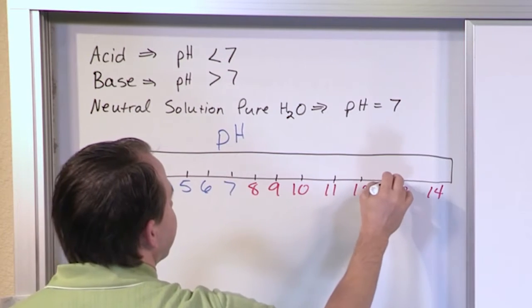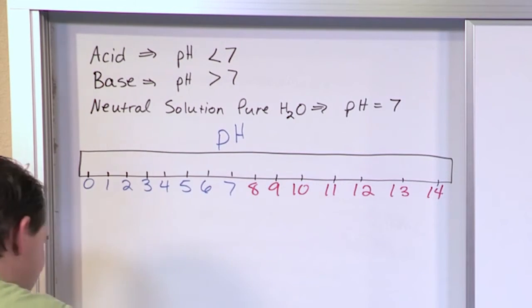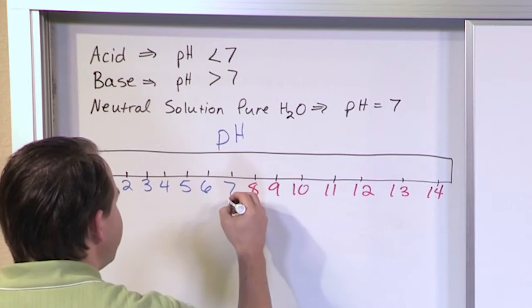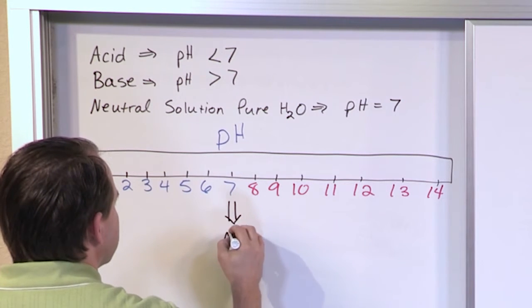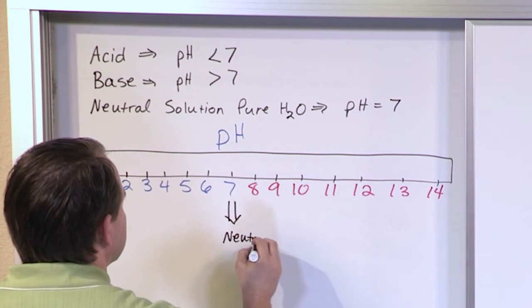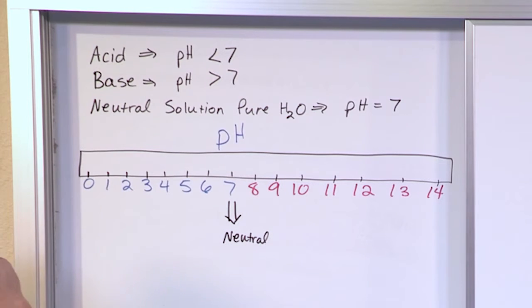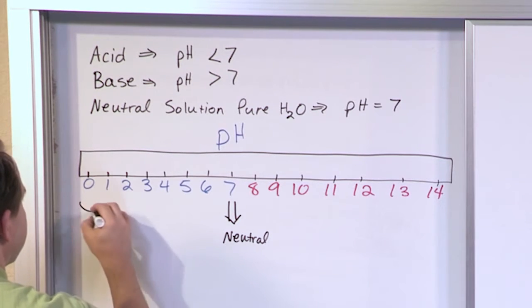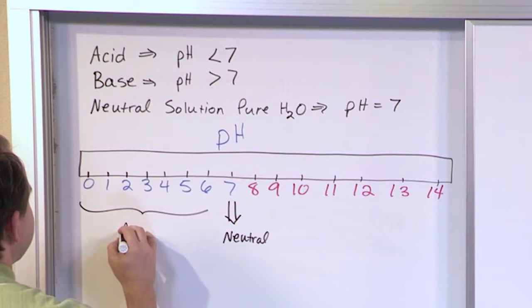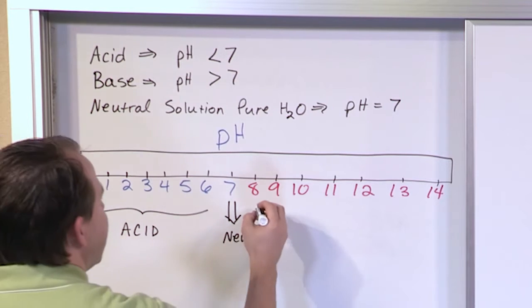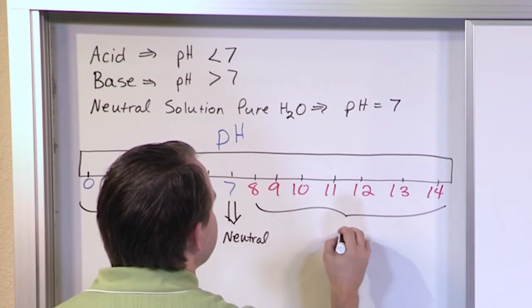So what we have: a pH of 7 is neutral. Everything over on this side is an acid, and everything over on this side is base.